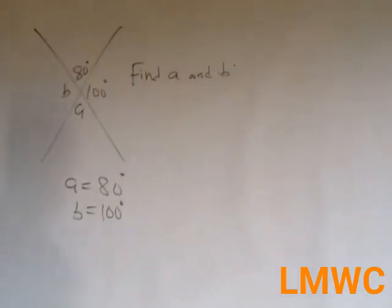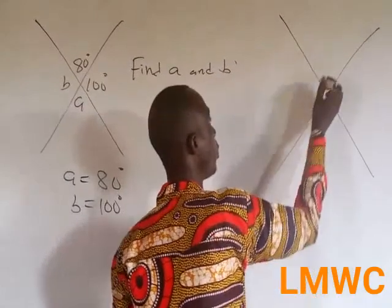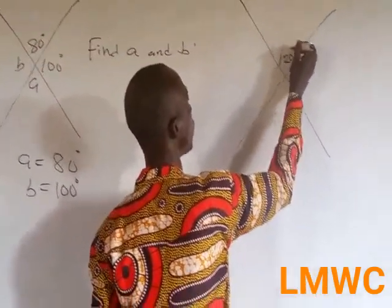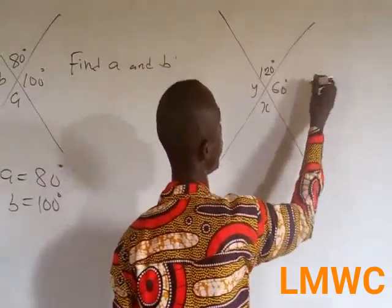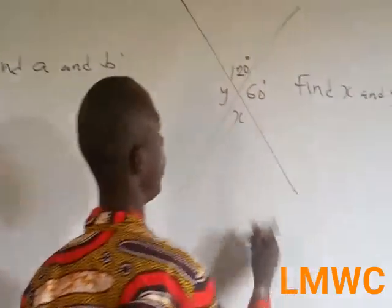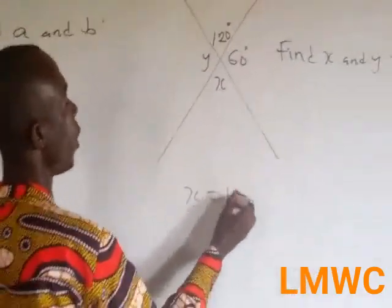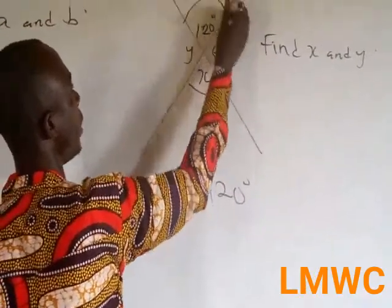For example 2, I can also give you 120, X, 60, Y. And I ask you to find X and Y. This means X is equal to 120 degrees because vertically opposite angles are equal, and Y is equal to 60 degrees.